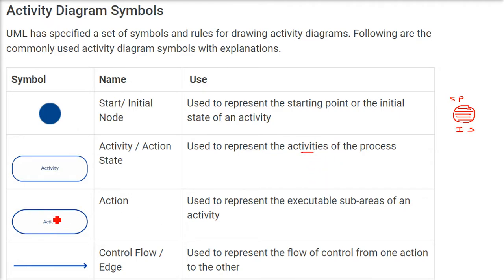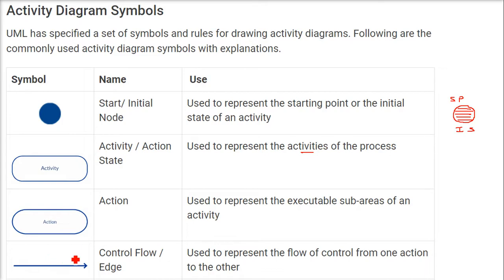Then we have actions. Actions are used to represent the executable sub-areas of an activity. The difference is that an activity uses a round-cornered rectangle, while actions use semi-circled corners on two corners. Then we have flows — represented by an arrow — which is called a control flow or edge. This is used to represent the flow of control from one action to another.